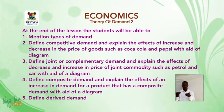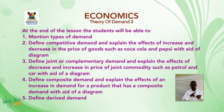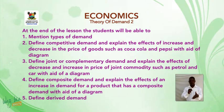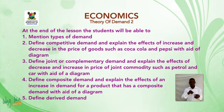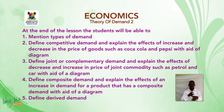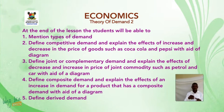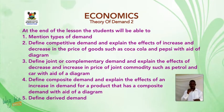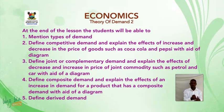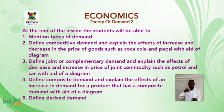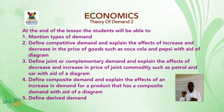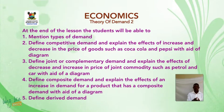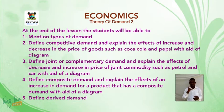At the end of the lesson, the student will be able to: one, mention types of demand; two, define competitive demand and explain the effects of increase and decrease in the price of goods such as Coca-Cola and Pepsi-Cola with the aid of a diagram; three, define joint or complementary demand and explain the effects of decrease and increase in the price of joint commodities such as petrol and car with the aid of a diagram; four, define composite demand and explain the effects of an increase in demand for a product that has a composite demand with the aid of a diagram; five, define derived demand.